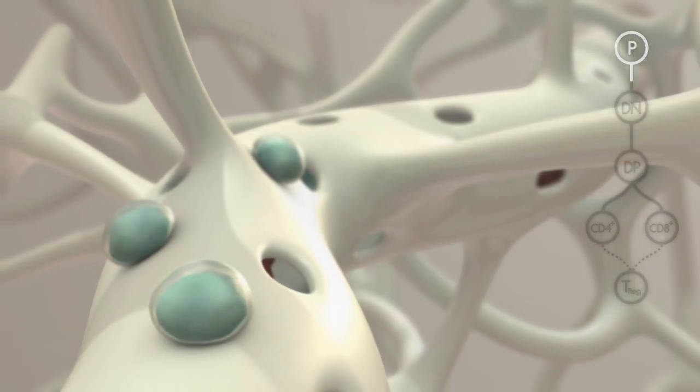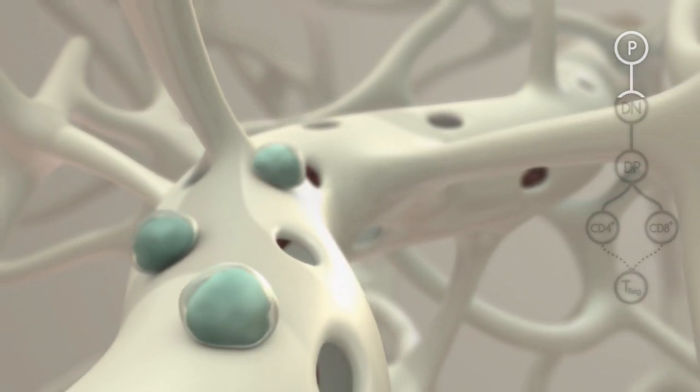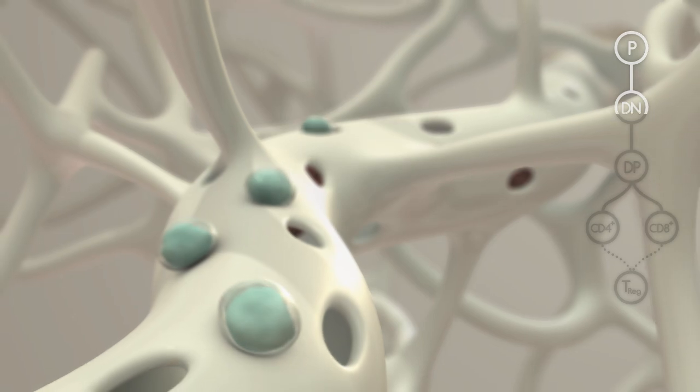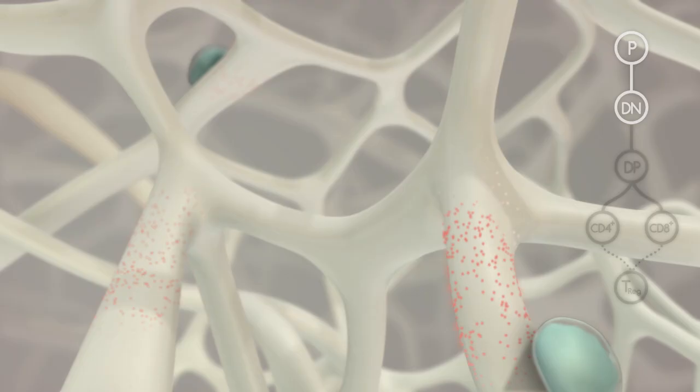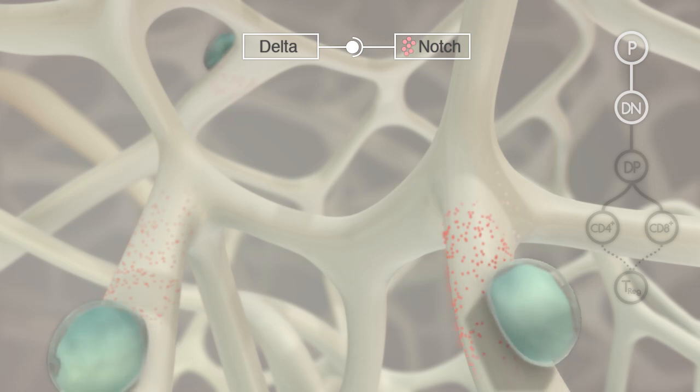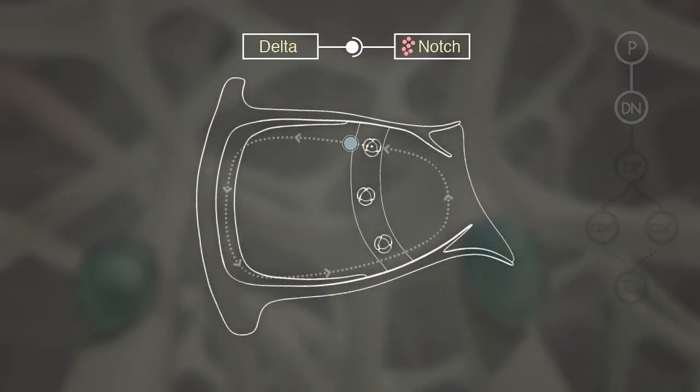Once in the parenchyma, these cells begin their initial development through the double negative, or DN, stages. DN thymocytes require notch signaling for their initial instructional cues, as well as for guidance throughout the cortex.